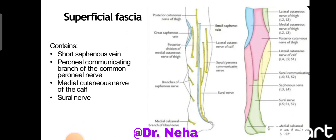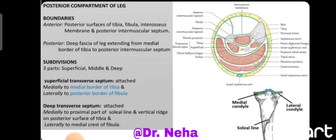Below the skin we find the superficial fascia, which contains the short saphenous vein and cutaneous nerves namely the peroneal communicating branch of the common peroneal nerve, the medial cutaneous nerve of the calf, and the sural nerve.